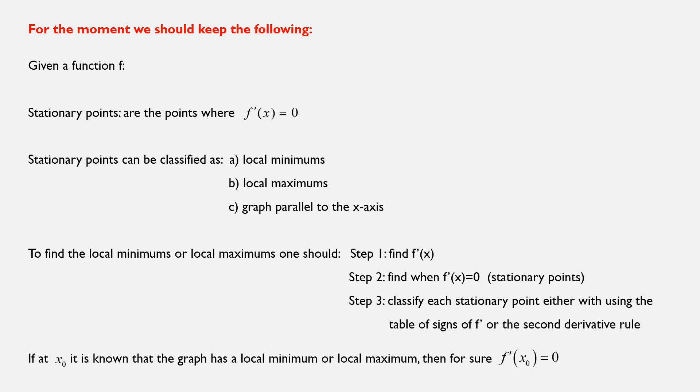At first, we should start by calculating the first derivative, f'(x). Then, we should solve f'(x) equal to 0, because we need to calculate the stationary points. Because, as we mentioned, if we cannot find any stationary points, then that only means that the graph does not present any local minimum or maximum. And then, once we have the stationary points, we have to classify them one by one, either by using the table of signs of the derivative of the function or by simply applying the second derivative rule.